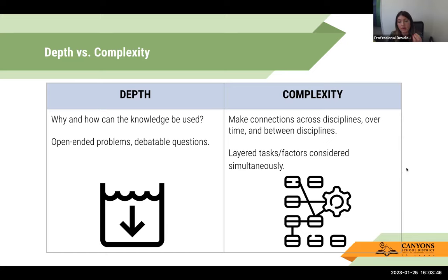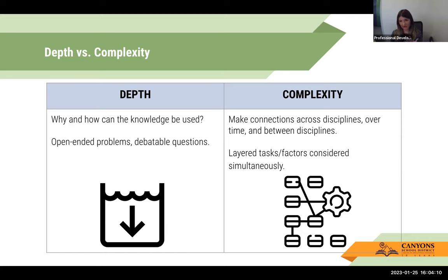When we talk about depth, we're thinking about how knowledge can be used and why it's used — open-ended problems and debatable questions that take content deeper. Complexity is a little harder to define. It has to do with making connections across content areas, over time, and between disciplines. These can be layered factors considered simultaneously, where both yes and no can be true at the same time. The framework's visual cues deepen learning and make it more complex, increasing those connections.